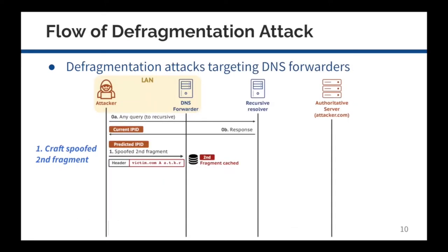Here is the entire flow of the cache poisoning attack targeting DNS forwarders. The attacker first crafts a spoofed second fragment, which contains rogue records of the victim domain. In this fragment, the only field that needs prediction is the 16-bit IP ID of the upstream resolver. By measurements, we find that a number of open DNS servers and public DNS services use global or hash-based IP ID assignments, which are predictable. The fragment is then sent to the DNS forwarder and will be cached to wait for reassembly.